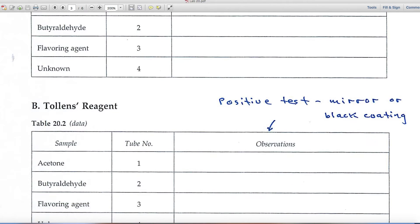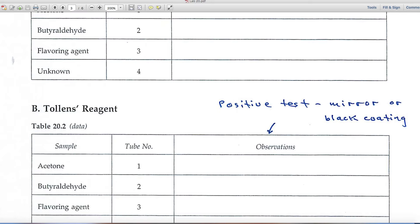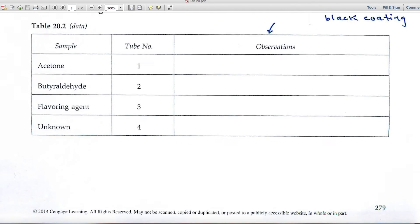In B, the Tollens test, a positive test is when a mirror or a black coating forms. So you'll want to look for those in your photos.